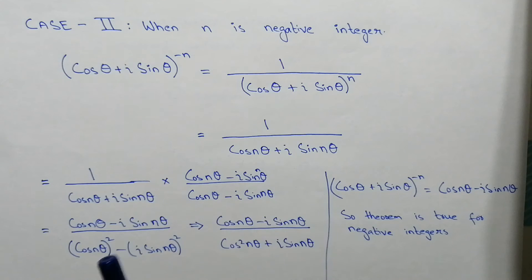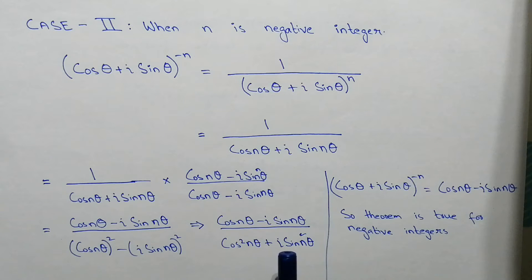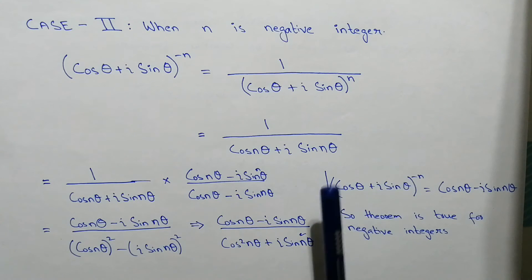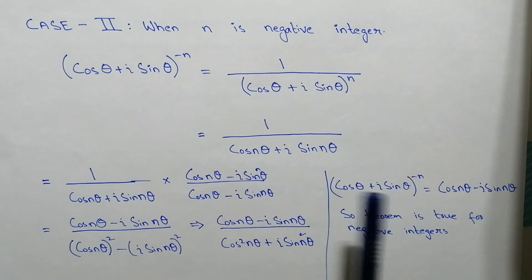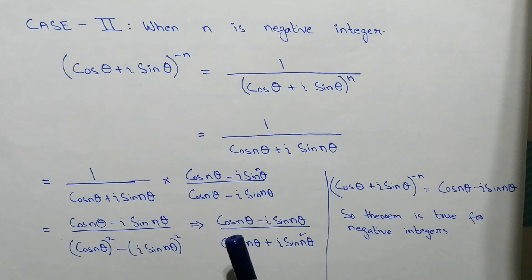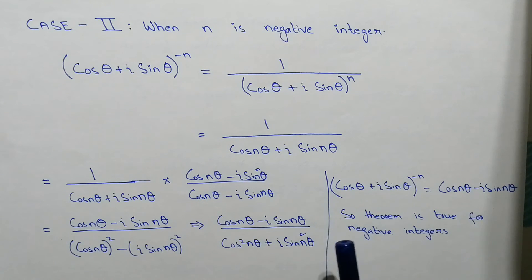Multiplying both terms gives (cos²nθ − (i sin nθ)²) in the denominator. Since i² = −1, that becomes cos²nθ + sin²nθ. The numerator remains cos nθ − i sin nθ. Since cos²nθ + sin²nθ = 1, the denominator equals 1. So (cos θ + i sin θ)^(−n) = cos nθ − i sin nθ, and we can say the theorem is true for negative integers.